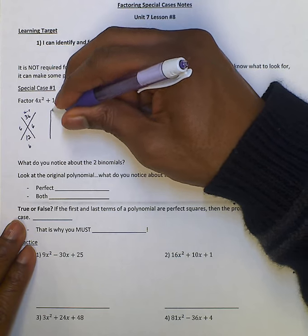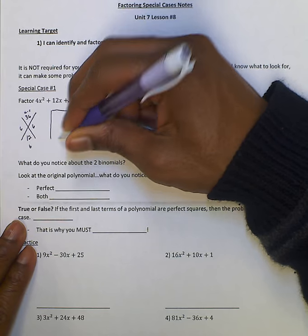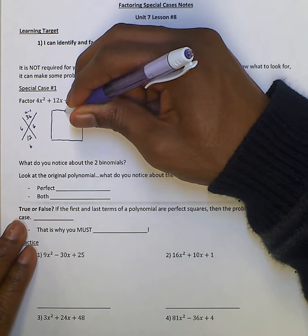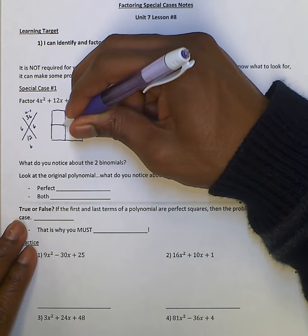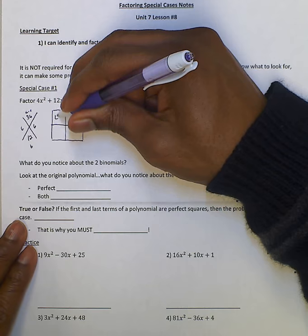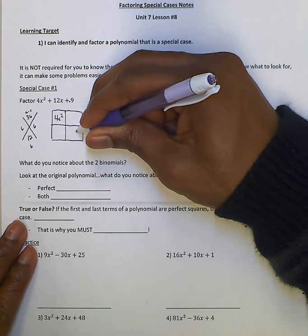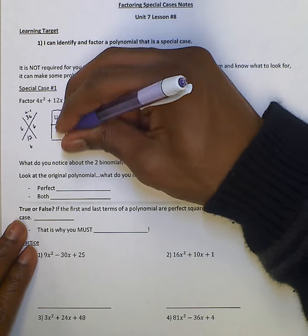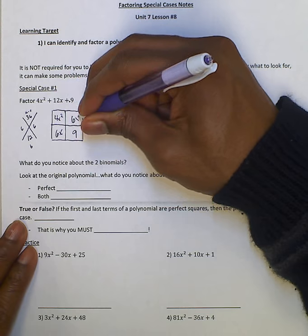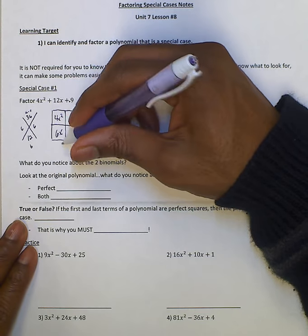So then we'll take those terms and put them in our box. The first term is in the first box, last term is in the last box, and then these two numbers will be in these boxes. Go through each row in each column and take out our GCF.